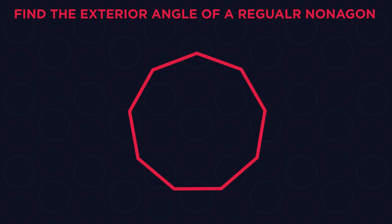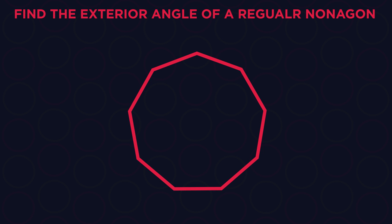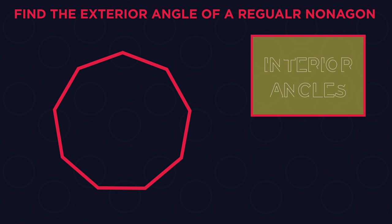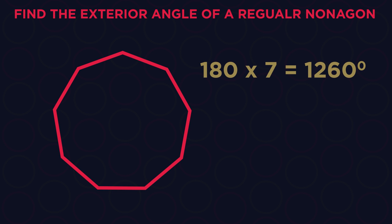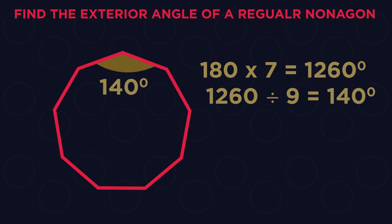What's the exterior angle of a regular nonagon? This is where we need to know about interior angles first. Start by finding the sum of interior angles. Nine sides means seven triangles. So seven times 180 means there are 1260 degrees in a nonagon. So one interior angle is 1260 divided by nine sides, which is 140 degrees.